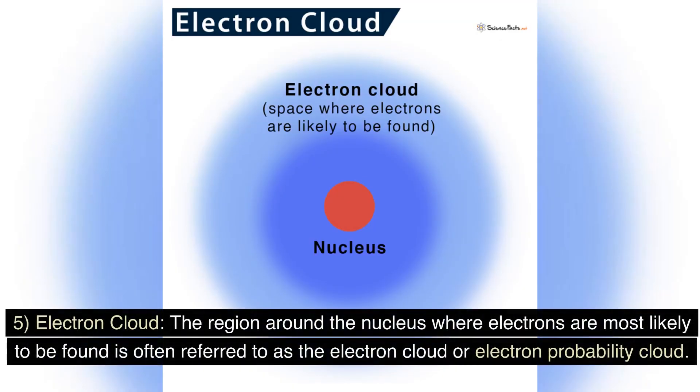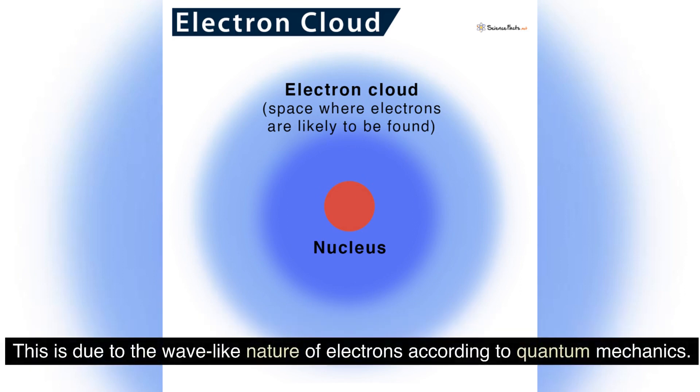Electron cloud: the region around the nucleus where electrons are most likely to be found is often referred to as the electron cloud or electron probability cloud. This is due to the wave-like nature of electrons according to quantum mechanics.